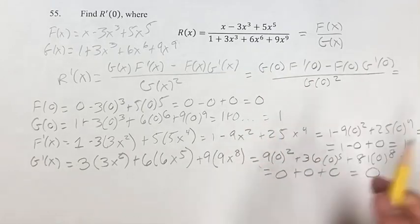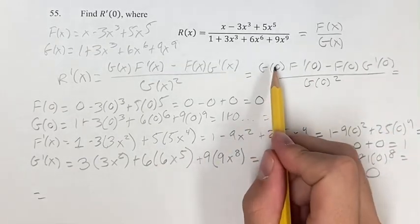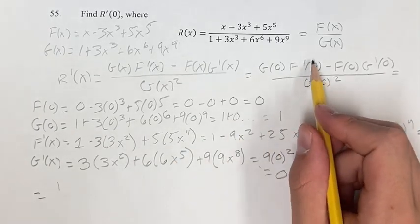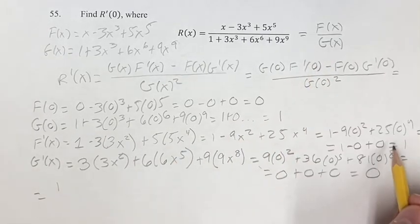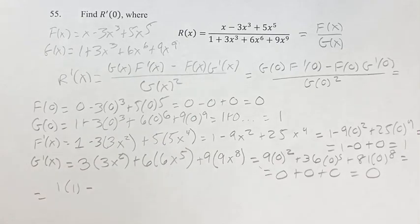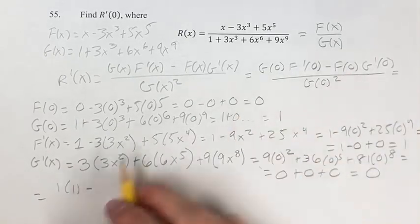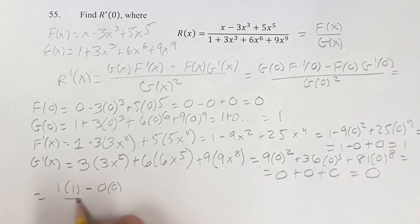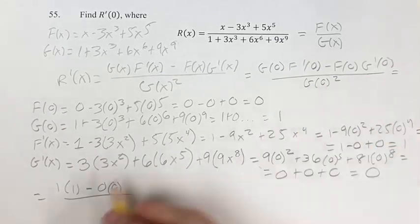So, calculating this, we have g of 0 is 1 times the derivative of f at 0 is 1, minus f of 0 is 0, g prime of 0 is 0, over g of 0 is 1 squared.